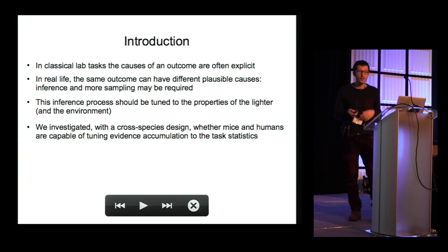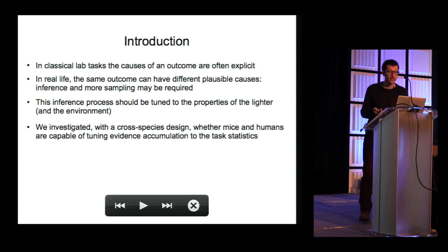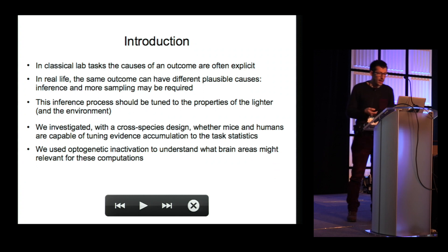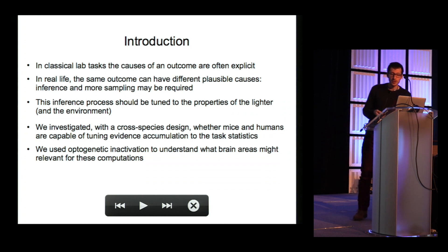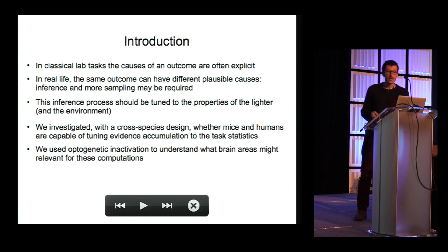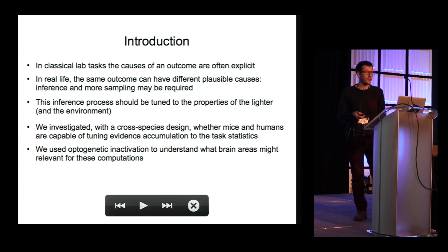These real-life ideas can be incorporated into a lab task. So, we did that and we investigated with a cross-species design whether mice and humans are capable of tuning evidence accumulation through data statistics. After having established that interesting computations are going on in our newly designed task, we used optogenetic inactivation in two distinct prefrontal cortices to understand which brain areas may be relevant for these computations.